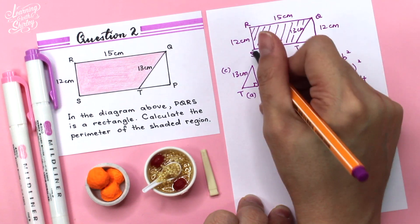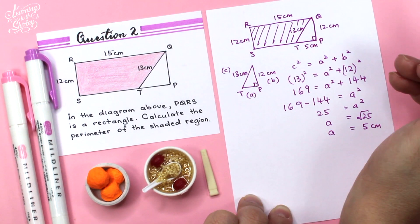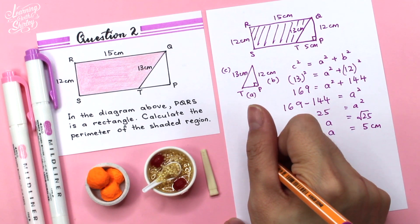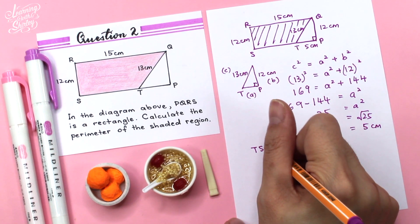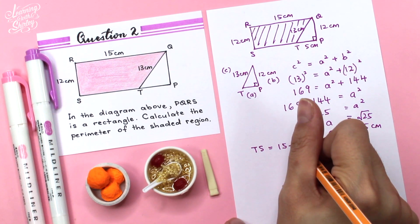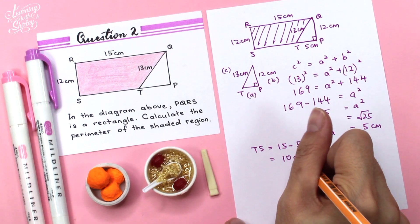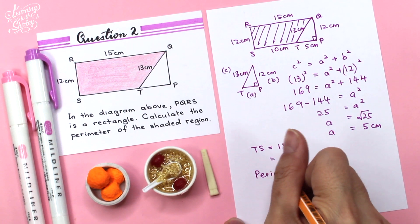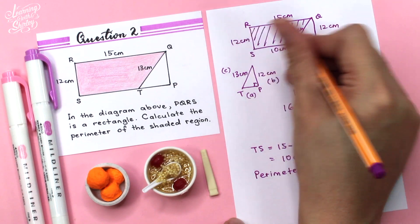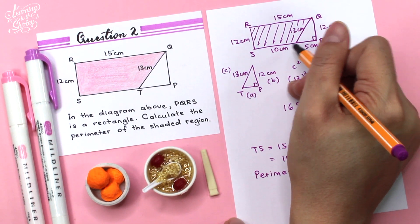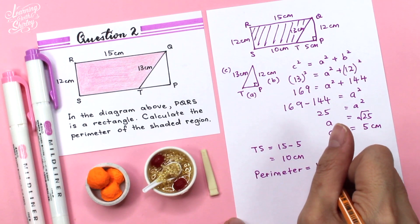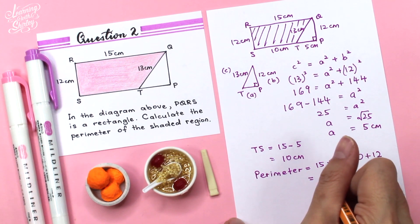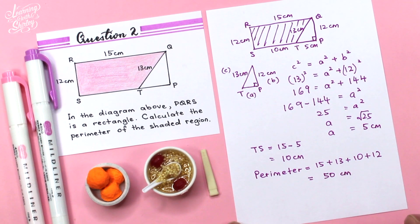We know that PQ equals QR, so QR is 15. To find TS, we use 15 minus 5, so TS equals 10cm. To find the perimeter of the shaded region, we add all the values: 15 plus 13 plus 10 plus 12. The perimeter equals 50cm. That's the final answer.